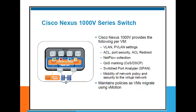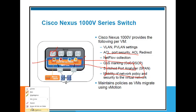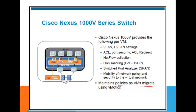Policy mobility was also there before 1000V in a distributed switch — we call it vMotion. When we move a VM from one virtual port to another, all that changes is the virtual port number, but the VM's properties never change. The policies it was under will be the same wherever it is moved, whether to a different location on the same switch or to another hardware host in the same ESXi cluster. So maintaining policy as the VM migrates using vMotion is supported.